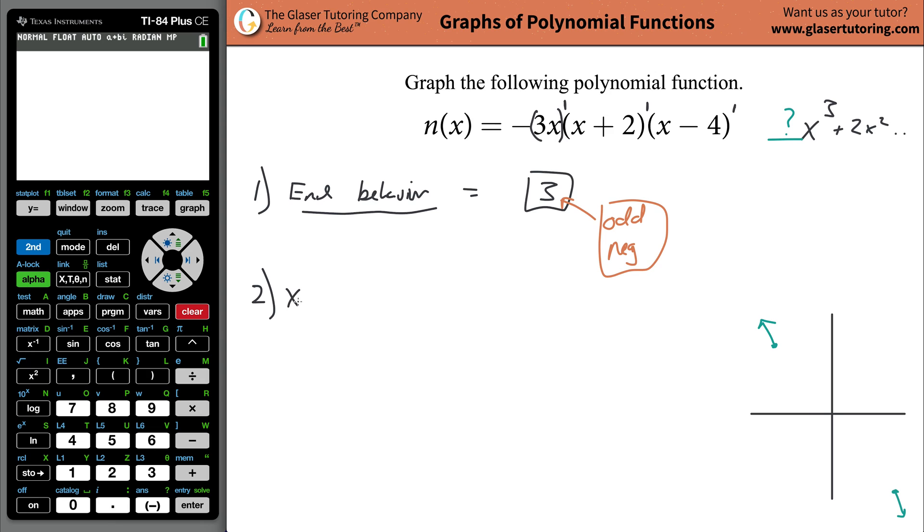The second part is then going to be to identify the x-intercepts. In this video, I'm just going to speed through that. If you want to know why I'm doing what I'm doing, check out this playlist on our channel. The x-intercepts, what we're going to do is take each of these factors and set them equal to zero. We're going to take 3x, set it equal to zero. Take x plus 2, set that equal to zero. And then take x minus 4 and set that equal to zero.